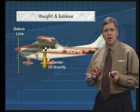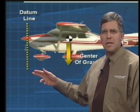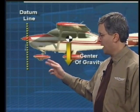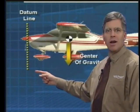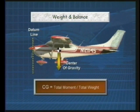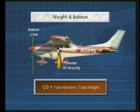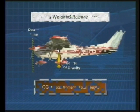The datum is a fixed point or line determined by the aircraft engineers. On this typical light airplane right here, the datum line is in the front of the aircraft. The center of gravity is always found by dividing the total moment by the total weight of the aircraft. In order to keep the CG within limits, it may be necessary to move weight towards the nose or tail. To help prevent improper loading, most baggage compartments will include a placard specifying the maximum weight of bags placed in that location.